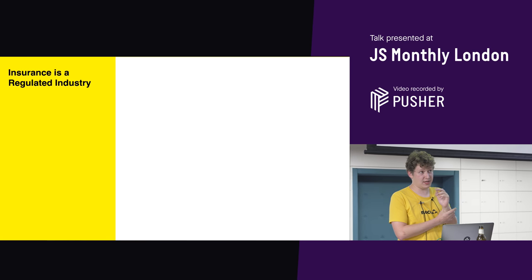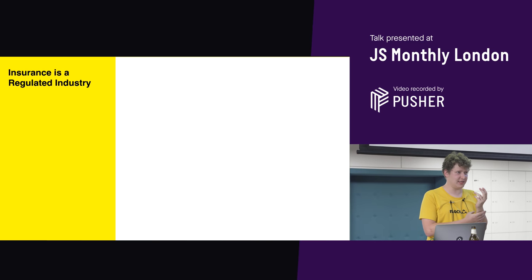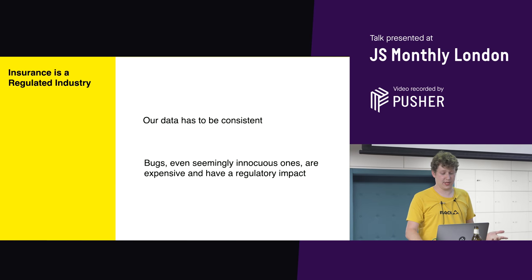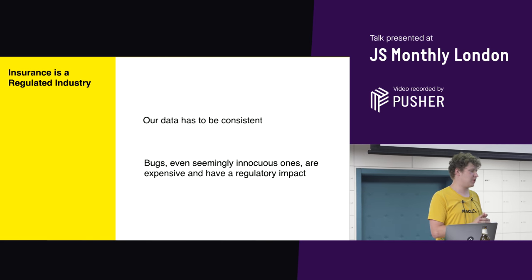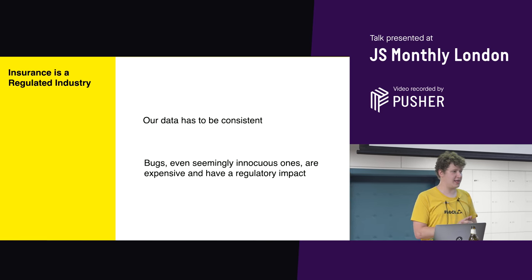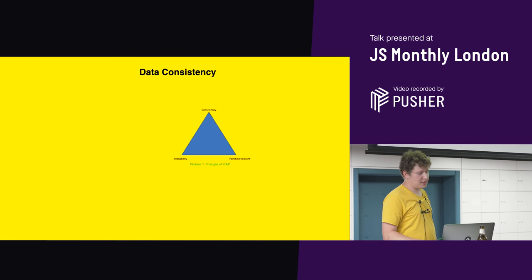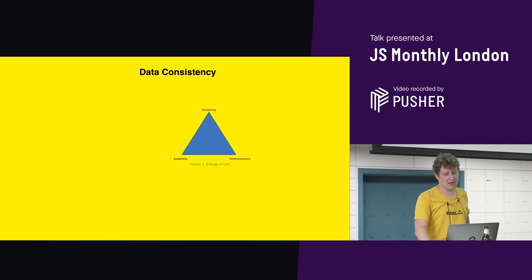That's how we address the data constraints. There is the other side: we work in insurance, which is a heavily regulated industry with an alphabet soup of laws and regulations. The direct impact is that our data has to be consistent — if it's inconsistent, that is straight up a lawsuit. Bugs, even seemingly innocuous ones, are expensive and can have regulatory impact. We take data consistency very, very seriously in the CAP triangle sense and the ACID transaction sense.